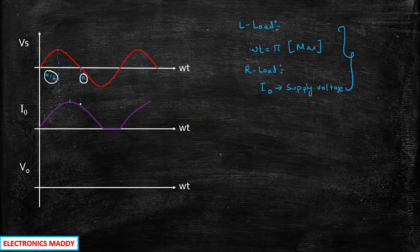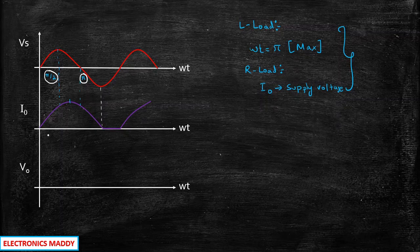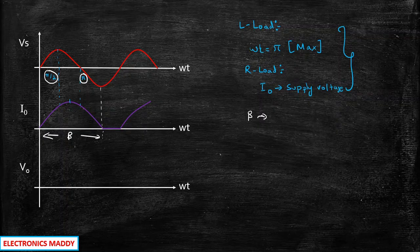During the negative half cycle, the current still flows till some point — the inductor is basically discharging. In the second case of the negative half cycle, the current will not flow because the diode acts as open circuit, and that is where the current goes to zero. The point at which the current decays to zero is basically called as beta. Beta is the extension angle — the point at which the output current decays to zero is called as beta.